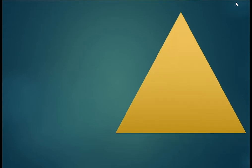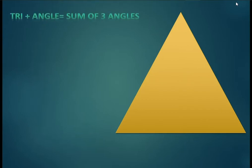Let us understand more about this geometrical shape which is present almost all around us. A triangle is a three-sided, two-dimensional closed structure. It is a polygon with three corners. The word triangle comes from 'tri' plus 'angle' — tri means three — so a triangle is a shape with three angles.